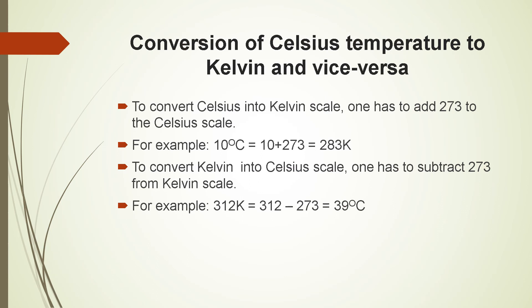To convert temperature from Celsius to Kelvin, simply add 273 to the Celsius value. For example, 10°C + 273 = 283 K. To convert from Kelvin to Celsius, subtract 273 from the Kelvin value. For example, 312 K − 273 = 39°C.